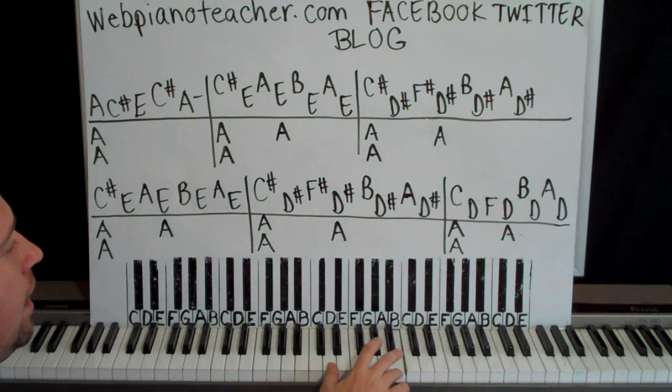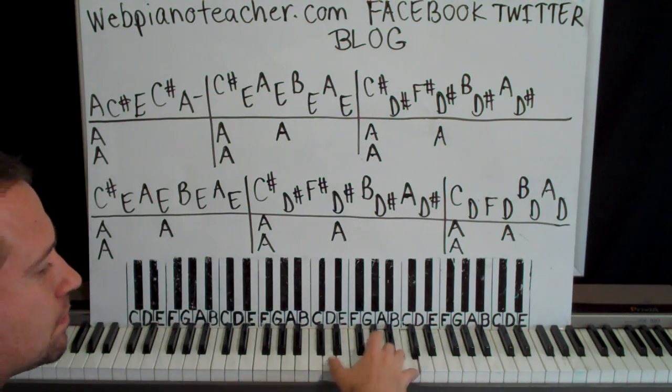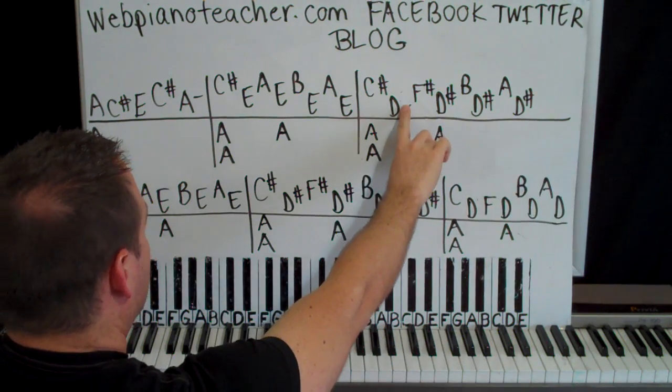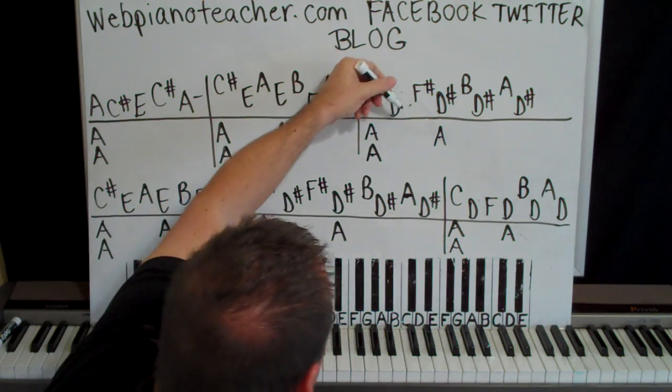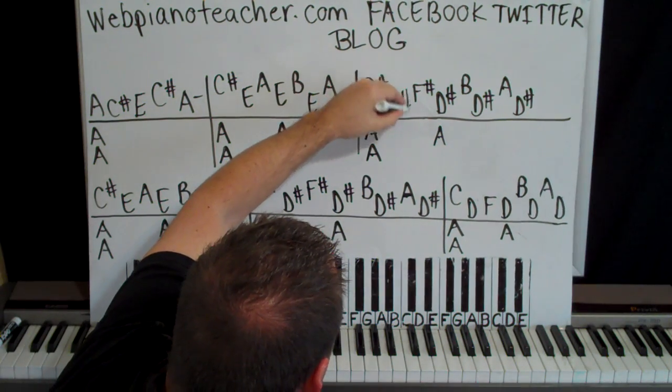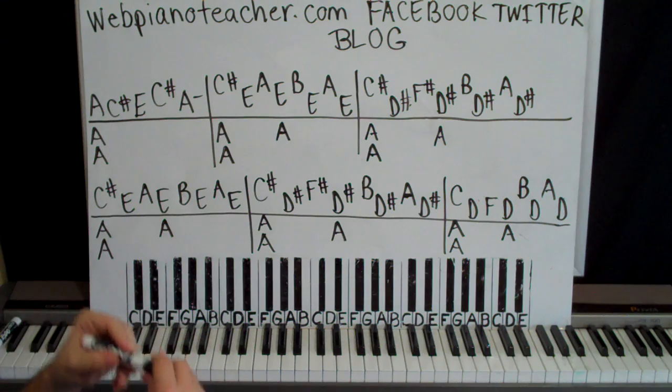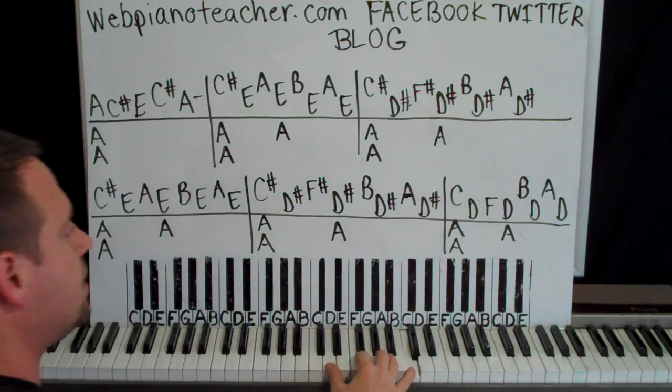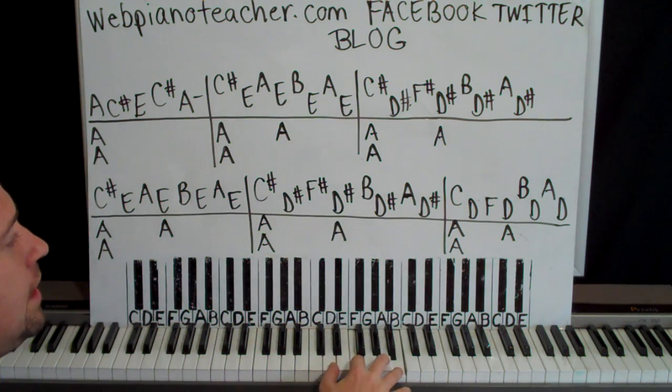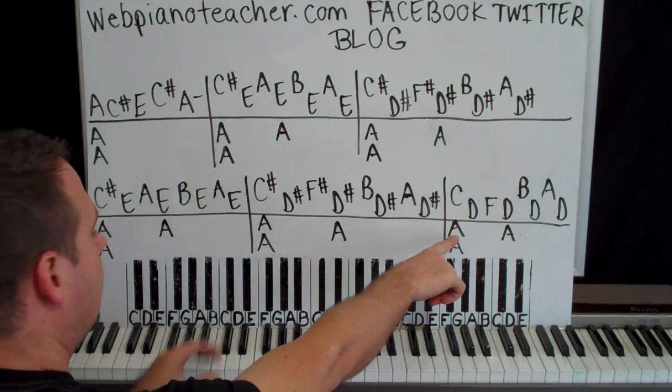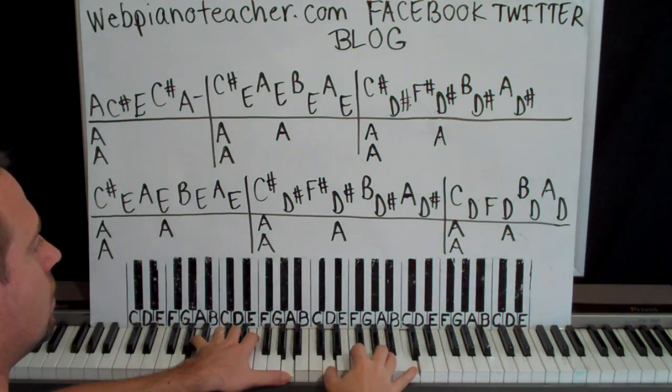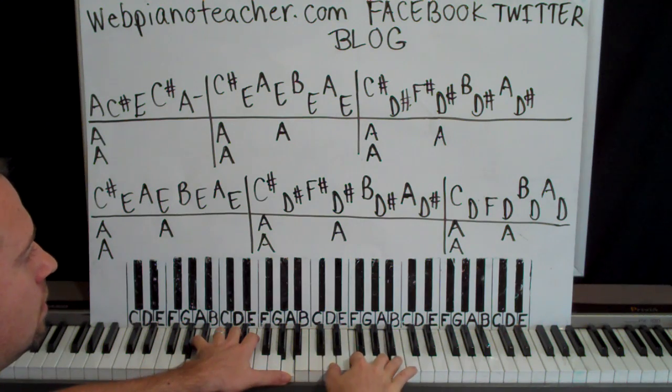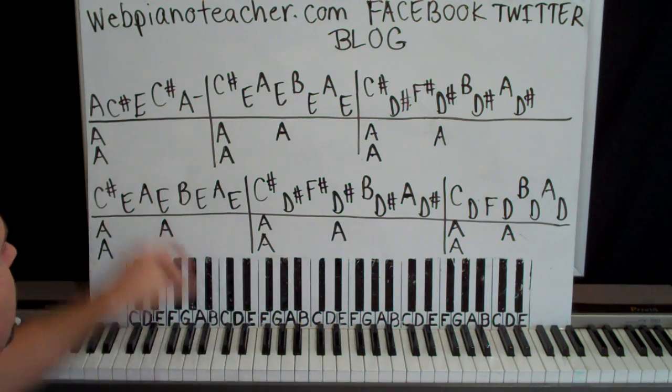And I just saw a typo that I made when I... no, I didn't. I think I messed up. I was looking at the wrong measure. Those are D sharps. All right, but no D sharps here. C, D, F, D, B, D, A, D. Left hand, an octave and then the single A there.